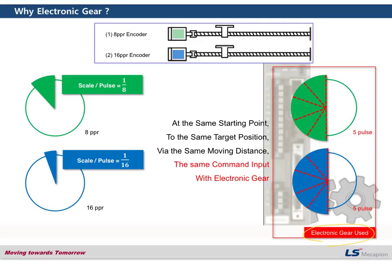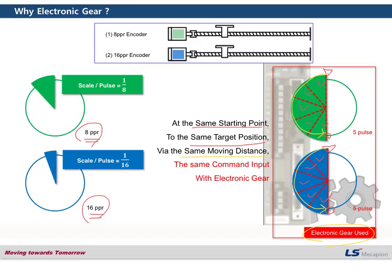At the same starting point, to the same target position, with the same moving distance, you can use the same command input for both axes. For example, 5 pulses for the first axis and also 5 pulses for the second axis. Even though they have different encoders and different resolutions, they accept the same input. This makes it much more convenient to control various axes.